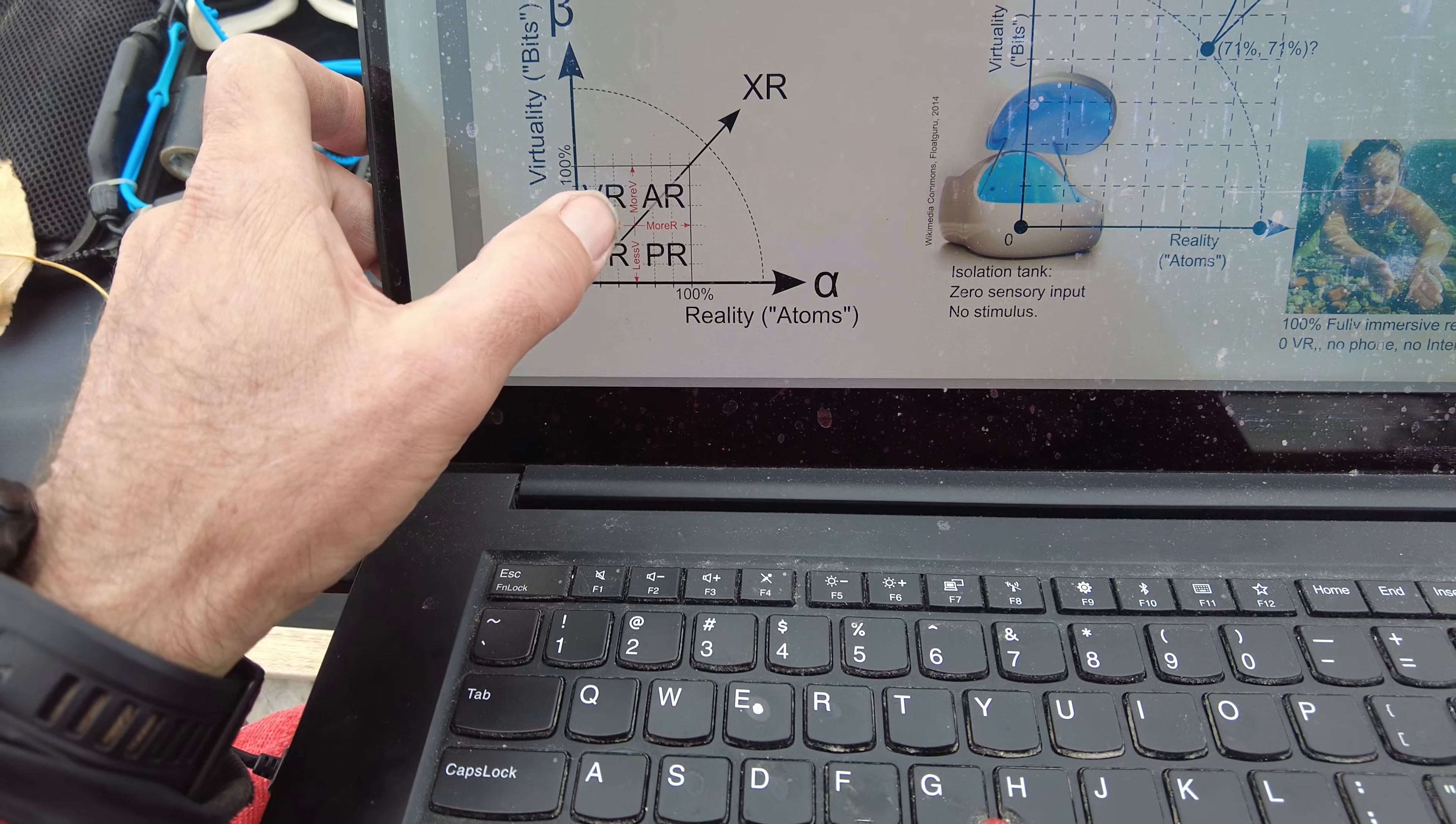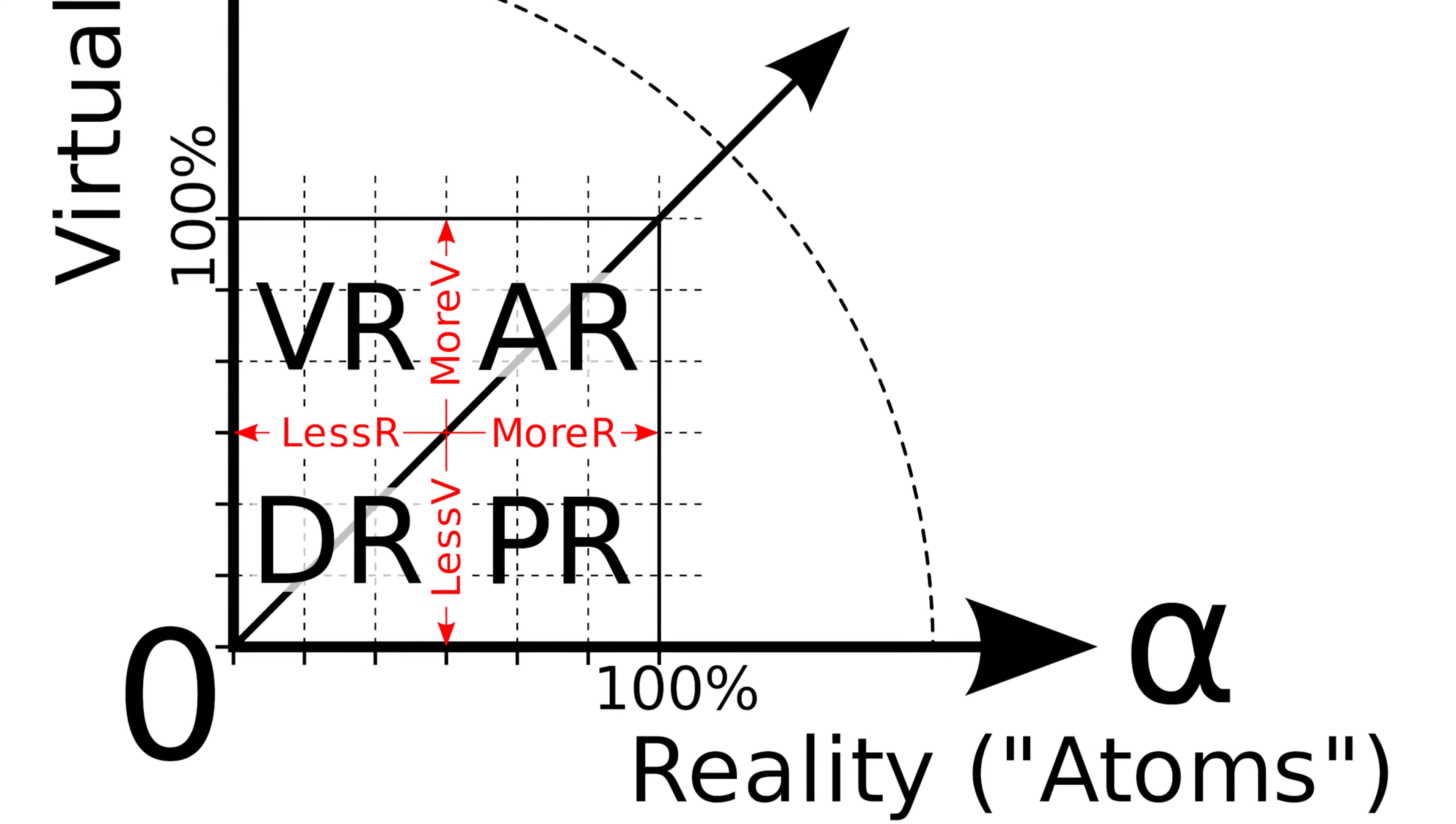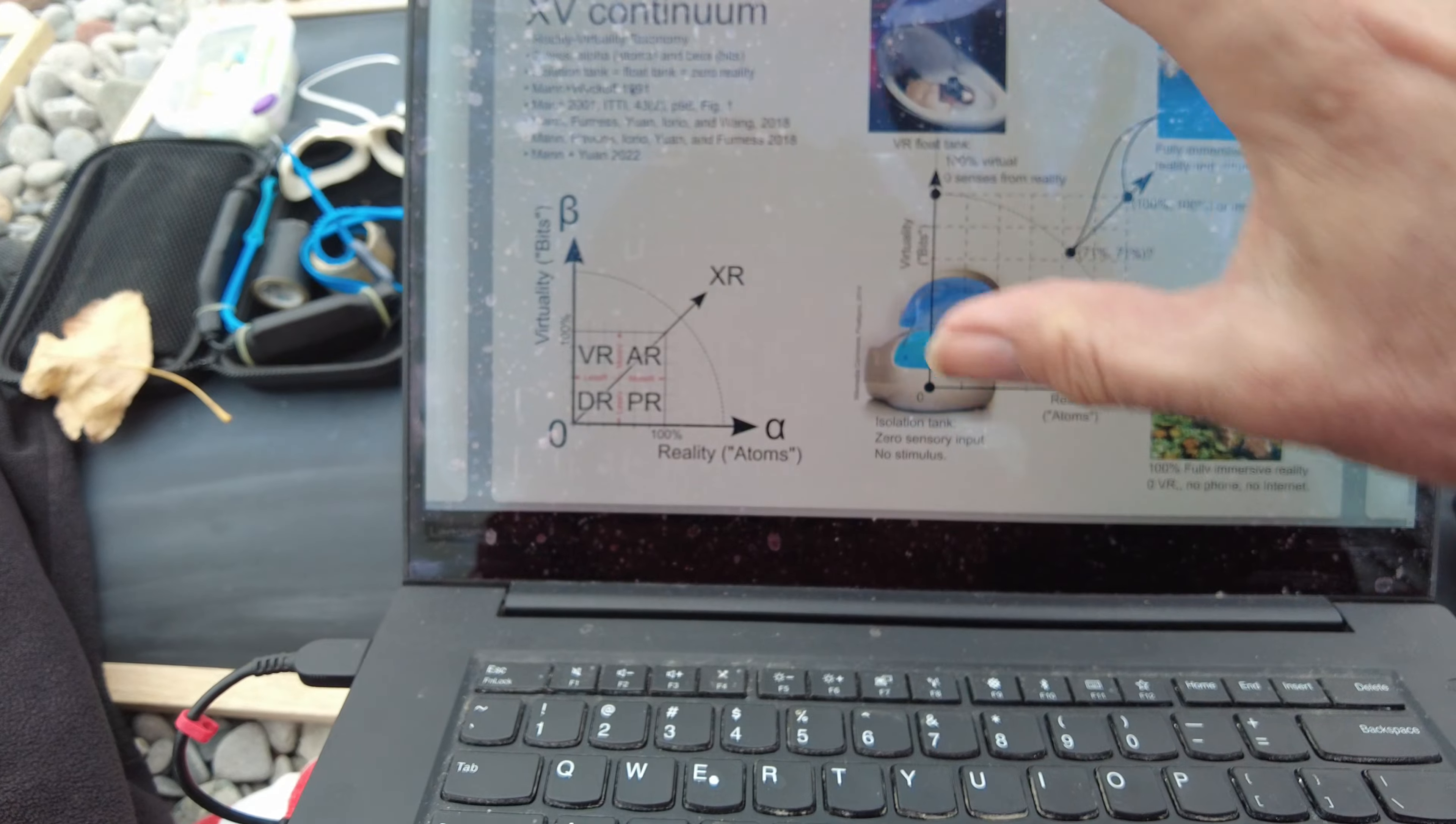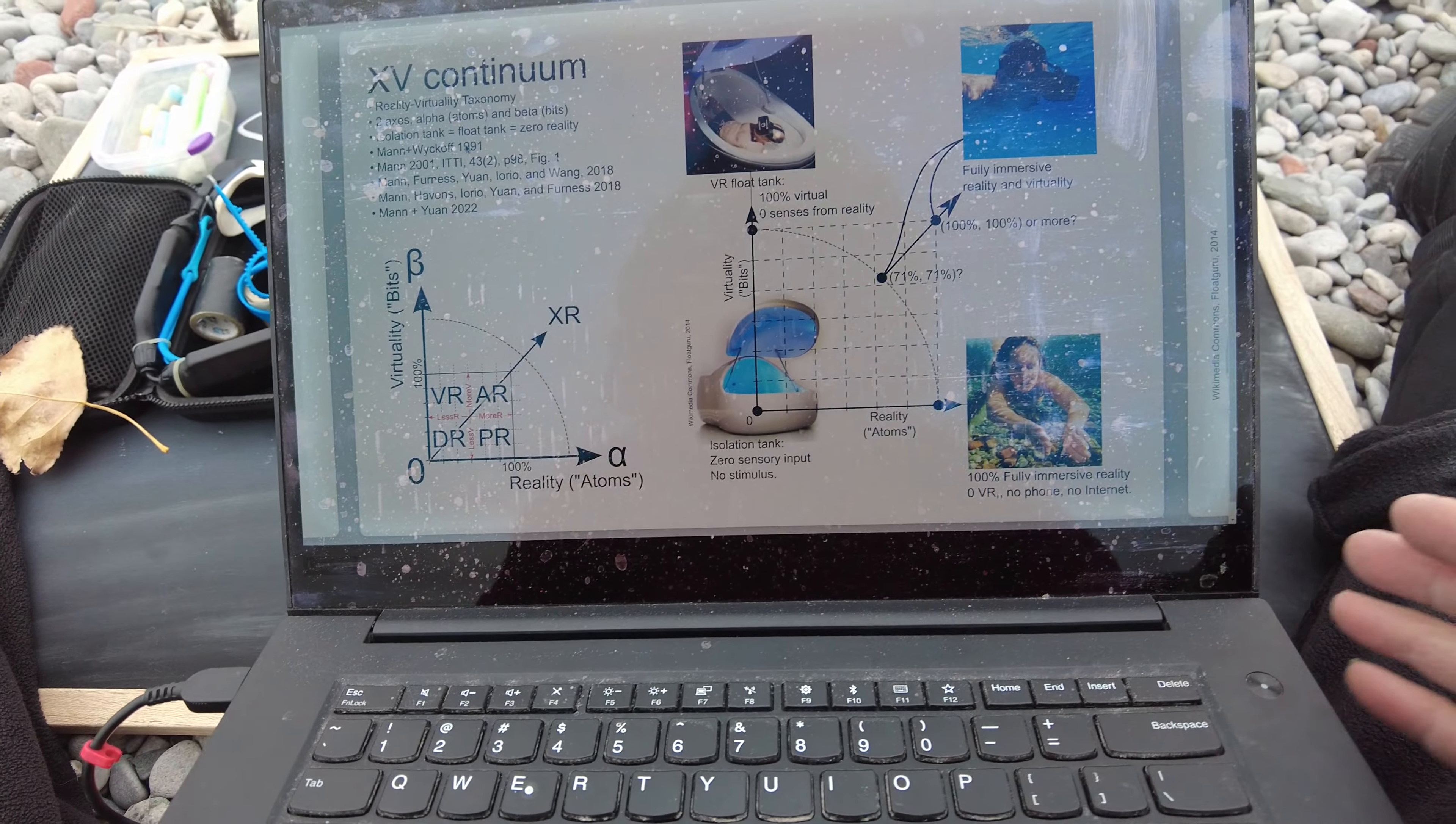Now if we look at the XV continuum, here we've got physical reality PR, augmented reality AR, virtual reality VR, and diminished reality DR. PR, AR, VR and DR are these sort of four quadrants, although it's a continuous space really. But what we really want is XR, which is this overarching theme which encompasses all of those and then some.